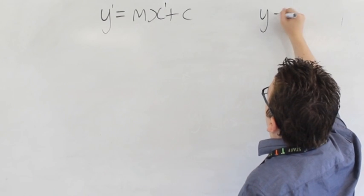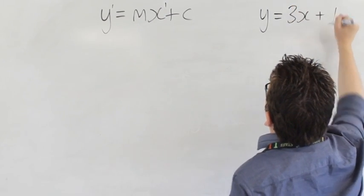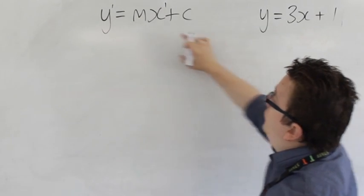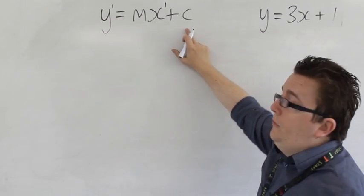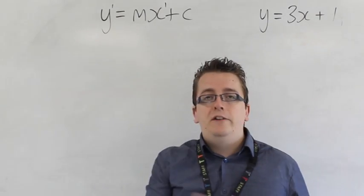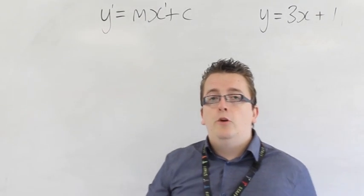So, for example, y equals 3x plus 1 is a linear equation. 3 represents the m and the 1 represents the c. OK, the 3 and the 1 are fixed numbers. They are unchanging. That's why they are known as constants.